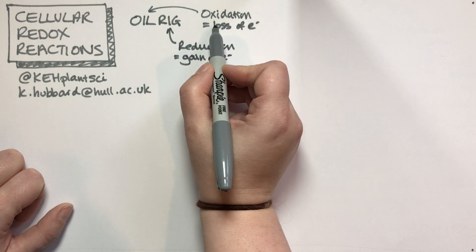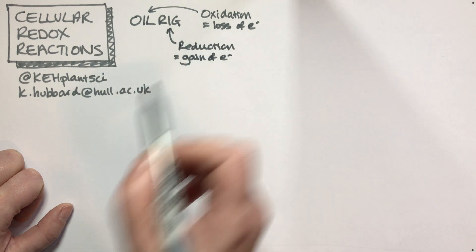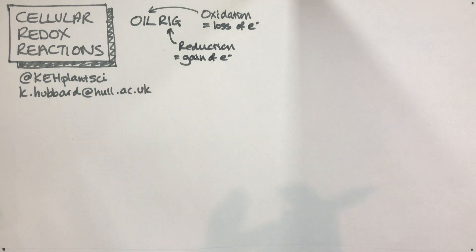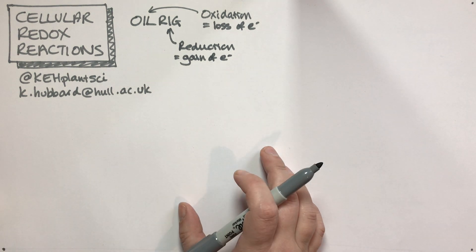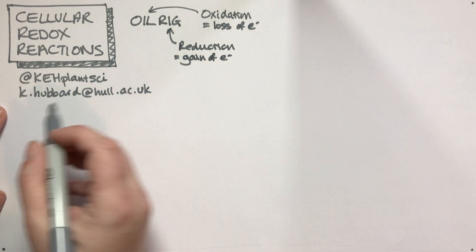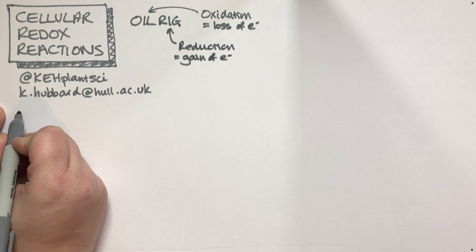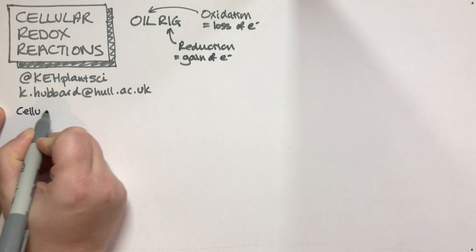Oxidation is loss, reduction is gain. Nearly all reactions in cellular metabolism are redox reactions. There are three cellular reducing agents.